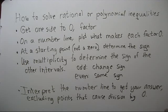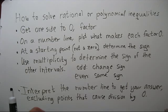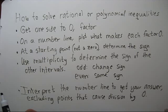This is a way to solve rational or polynomial inequalities that minimizes arithmetic. First, get one side to zero and factor your numerator and denominator. Then on a number line, plot what makes each factor zero.